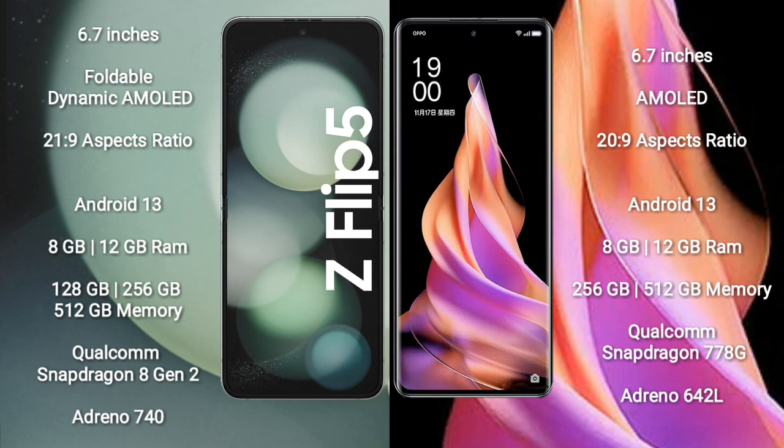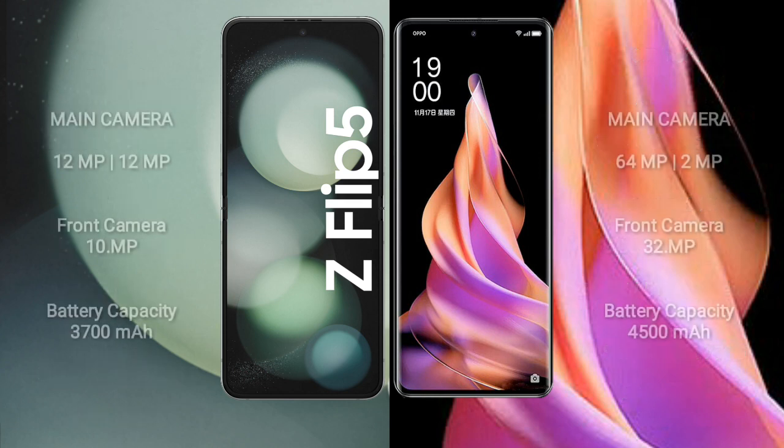Oppo Reno 9 comes with 8GB or 12GB RAM and 256GB or 512GB internal storage. It is powered by a Qualcomm Snapdragon 778G processor and Adreno 642L GPU.